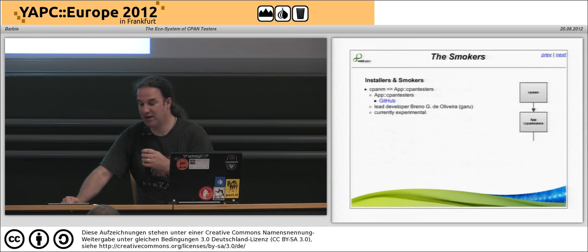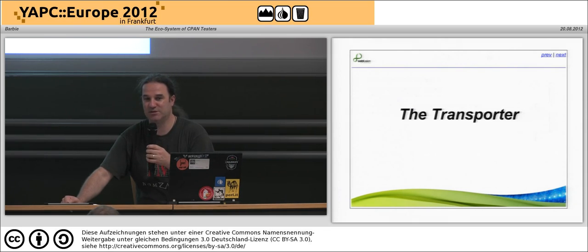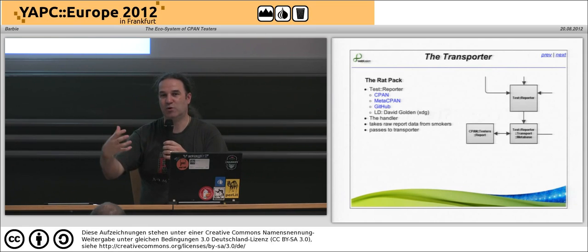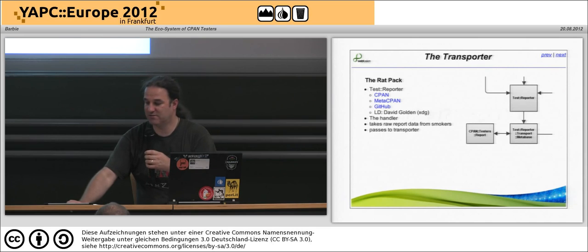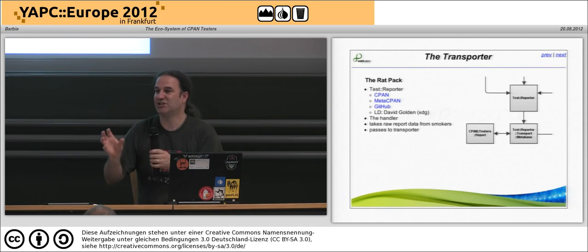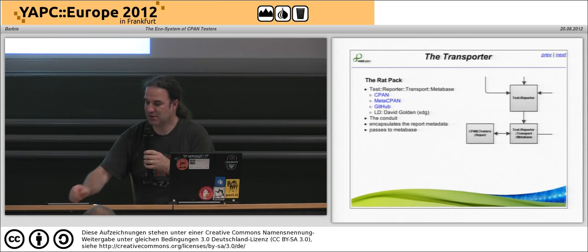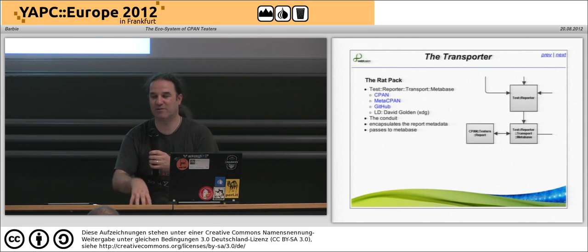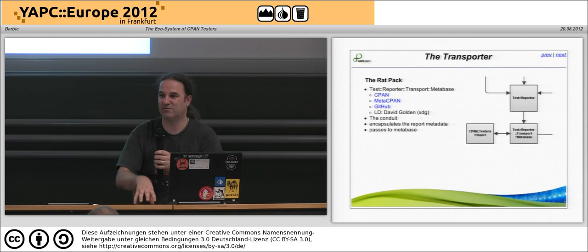App CPAN Testers is written by Bruno and is currently experimental, but feel free to have a look and a play with it. Moving on, we have the transport layer. This entails allowing the smokers to package their reports and send them to the metabase. There are three parts to this. First is the Test Reporter, which looks at the report sent by the smoker, packages it into a metadata hash, and then sends it to the transporter. From the transporter, before it sends to the metabase, we have software that looks at more in-depth information, usually about the platform.